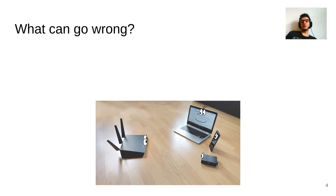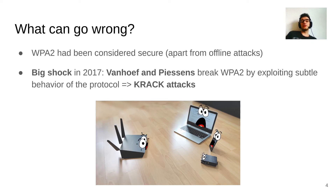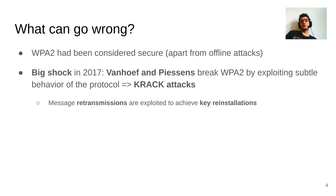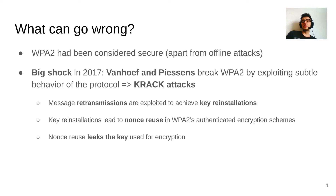So what could go wrong here? WPA2 had actually been considered secure up until 2017, apart from certain offline guessing attacks. But in 2017, Vanhoef and Piessens broke the WPA2 protocol via the so-called KRACK attacks. Those KRACK attacks exploited message retransmissions in the four-way handshake to achieve reinstallation of the pairwise transient key, and this reinstallation then led to nonce reuse in WPA2's authenticated encryption schemes. Now let's talk about those nonces for a second. Those nonces, in the context of authenticated encryption schemes, are equivalent to initialization vectors in the context of more traditional cryptographic schemes. They are used together with a key to encrypt data and are incremented after each encryption. But in those authenticated encryption schemes, the reuse of those nonces actually leads to the key being leaked towards an attacker — and this also happened in the KRACK attacks.